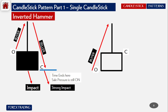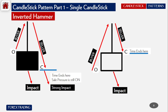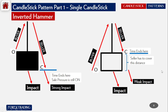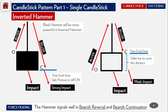For the bullish inverted hammer, the buyer takes the price to the upper level of the wick and then the seller brings it down to close lower. Its impact will be downward and we call it a weak impact, because the seller still has to cover the distance from the close to the open. The black inverted hammer is more powerful as it gives a strong impact. The inverted hammer signals a bearish reversal or bearish continuation.